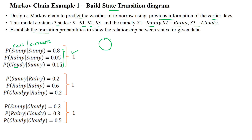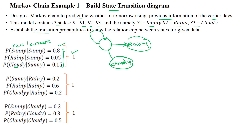For the current state sunny, there are three outgoing edges: one to rainy, one to cloudy, and one back to sunny itself. Sunny to itself is 0.8, rainy given sunny is 0.05, and cloudy given sunny is 0.15. The sum of these outgoing edges equals 1.